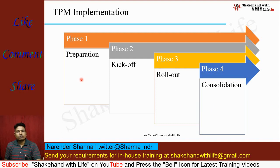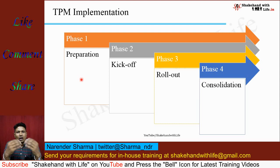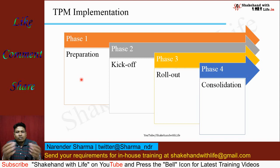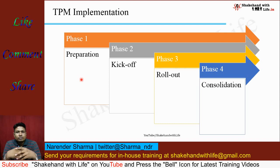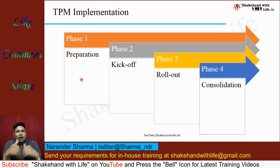In phase 1, prepare how to implement the TPM program. Phase 2 is kickoff — inform your customers and suppliers officially that you are going to implement the TPM program. In phase 3, actually implement the TPM program with the help of the 8 pillars of TPM. And in phase 4, study how much you have achieved, how much you have reduced losses at a particular site, and how much you have improved the productivity of the factory.